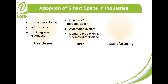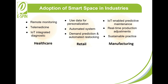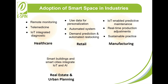Manufacturing — Smart Factories improve efficiency with IoT-enabled predictive maintenance, real-time production adjustments, and sustainable practices through better energy and material management. Real Estate and Urban Planning — Smart Buildings and Smart Cities integrate IoT and AI for energy efficiency, security, and optimized urban infrastructure, enhancing livability and sustainability in urban environments.